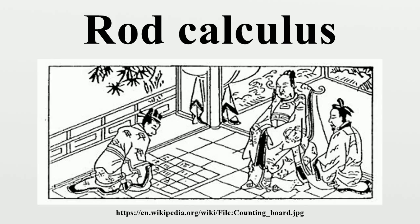In situations where borrowing is needed, such as 4,231 minus 789, a more complicated procedure is used. Place the minuend 4,231 on top and the subtrahend 789 on the bottom, calculating from left to right. Borrow 1 from the thousands place to get 10 in the hundreds place, subtract 7, leaving a difference of 3 added to 2 on top to form 5. Then borrow 1 from the hundreds place, giving 10 in the tens place minus 8, resulting in 2 added to 3 to form 5. The top row becomes 3,451. Borrow 1 from the 5 in the tens place, leaving 4; the borrowed 10 in the units place minus 9 equals 1, added to top to form 2. The result is 3,442.